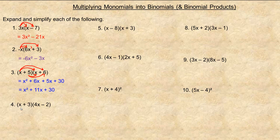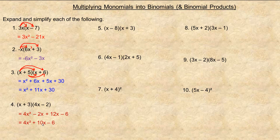For number four, same idea: x times 4x is 4x squared, x times negative two is minus 2x, then three times 4x is 12x, and three times negative two is minus six. In the middle, negative 2x and 12x are like terms: negative two plus 12 is 10, so they add to 10x. The answer is 4x squared plus 10x minus six.